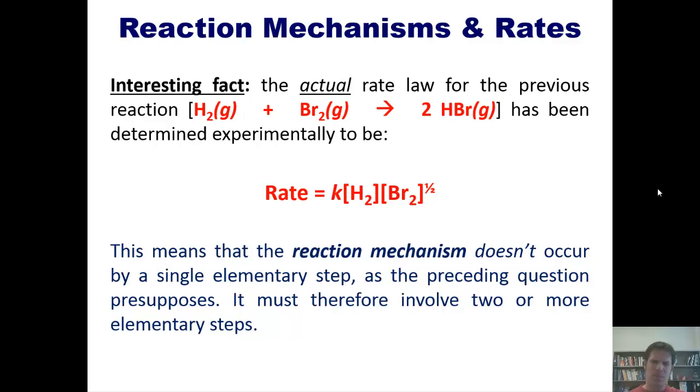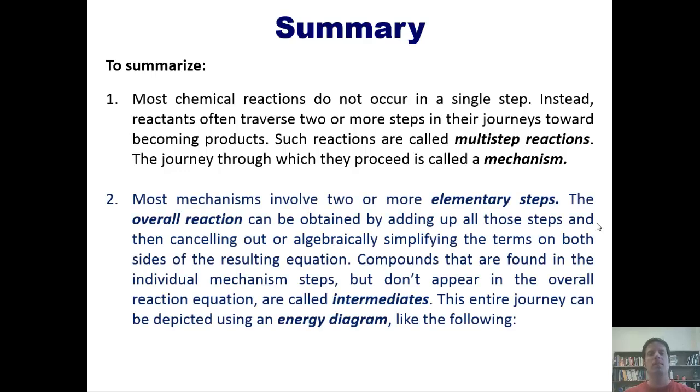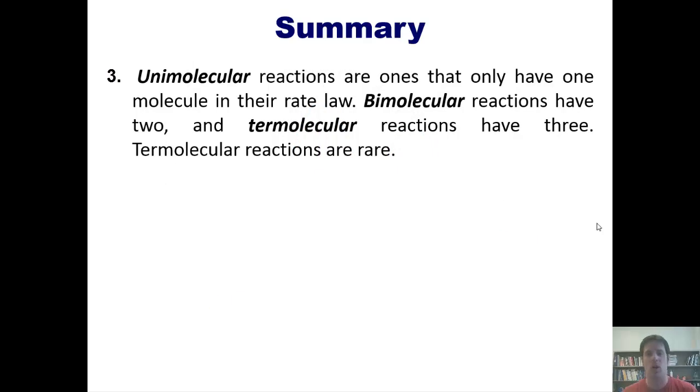Okay, with that said, I know we've covered a lot in this video. It's been a long video. I want to end summarizing everything that we've learned. First, most chemical reactions do not occur in a single step. Instead, reactants often traverse two or more steps in their journey toward becoming products. Such reactions are called multi-step reactions. The journey through which they proceed is called that reaction's mechanism. Second, most mechanisms involve two or more elementary steps. The overall reaction can be obtained by adding up all of those steps and then canceling out or algebraically simplifying the terms on both sides of the resulting overall equation. Compounds that are found in the individual mechanism steps but don't appear in the overall final reaction are called intermediates. This entire journey can be depicted using an energy diagram like this one. Third, unimolecular reactions are ones that have only one molecule in their rate law. Bimolecular reactions have two and termolecular reactions have three. Termolecular reactions are rare.